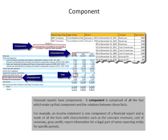A component is basically a piece of a financial report. Financial reports have components, and a component is comprised of all the facts which make up that component and the relations between those facts. For example, an income statement is one component of a financial report, made of all the facts with characteristics such as revenues, costs of revenues, gross profit, the legal part of the reporting entity, and the specific periods for which information is reported. The primary thing to understand here is the notion of a component — we'll get to the details at another time.